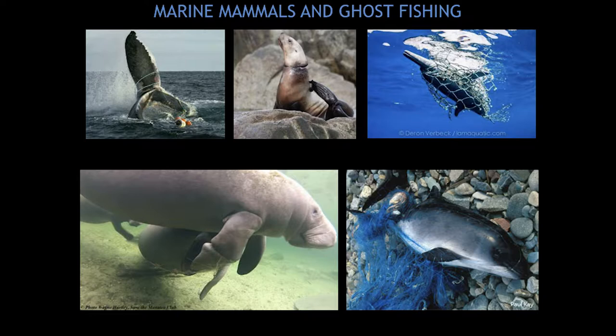For manatees, there is not much literature on the effect of ghost fishing on them. But what we do know is that manatees really do have a problem with monofilament line. Manatees interact with both freshwater and saltwater environments — exactly where recreational fishers are also present. Where there are recreational fishers, there is also lost fishing line. There is evidence to indicate that monofilament line could be the main ghost gear entangling manatees.